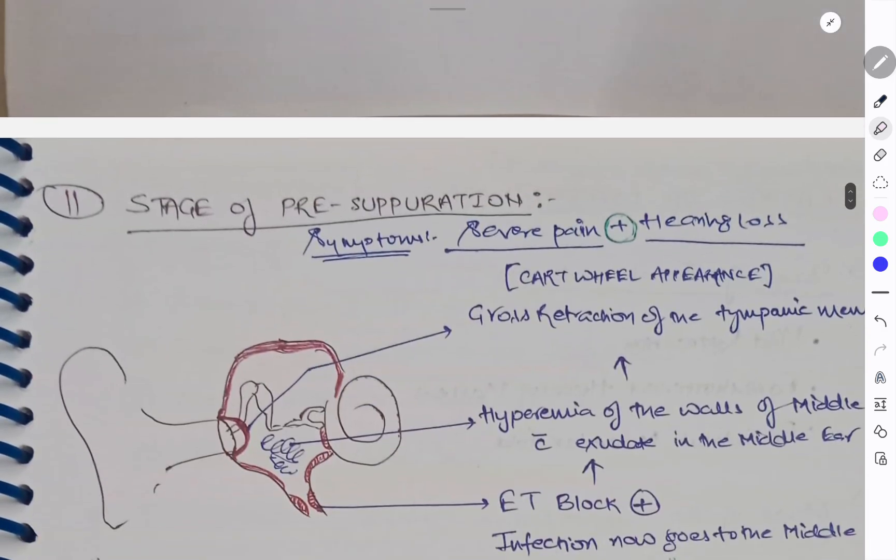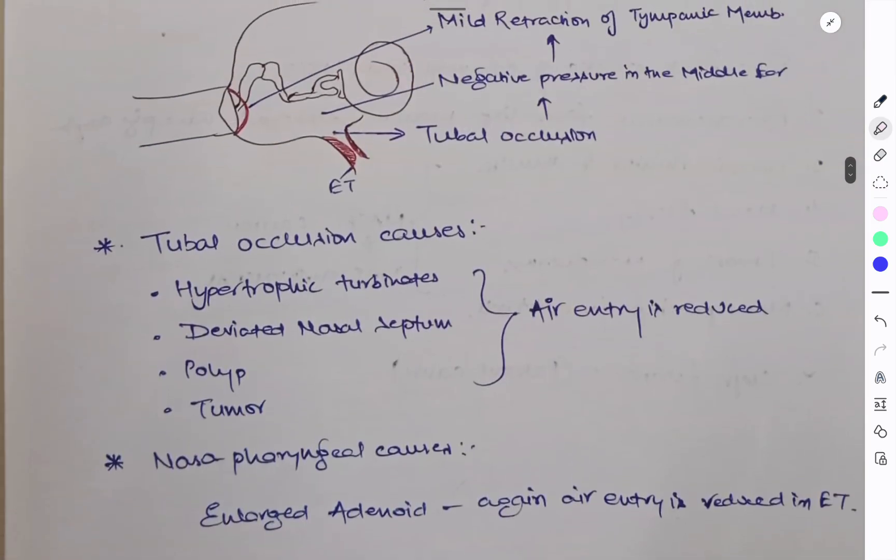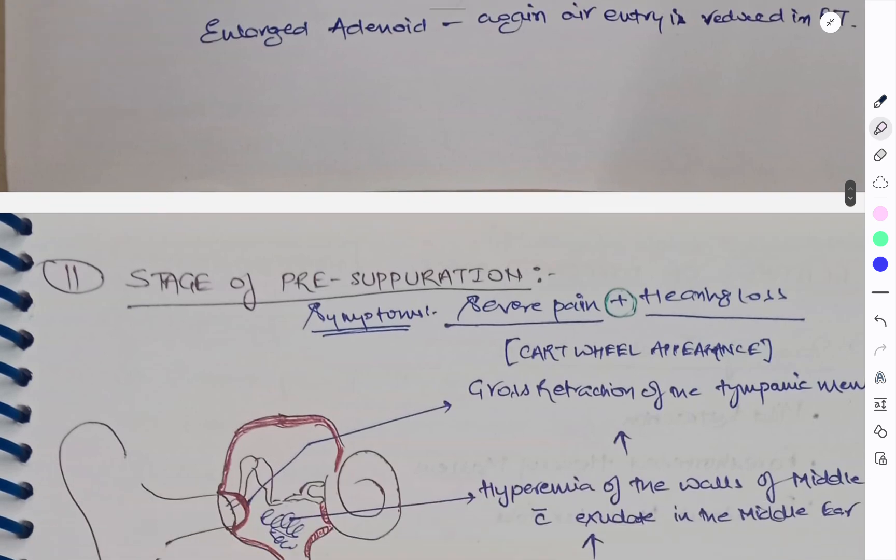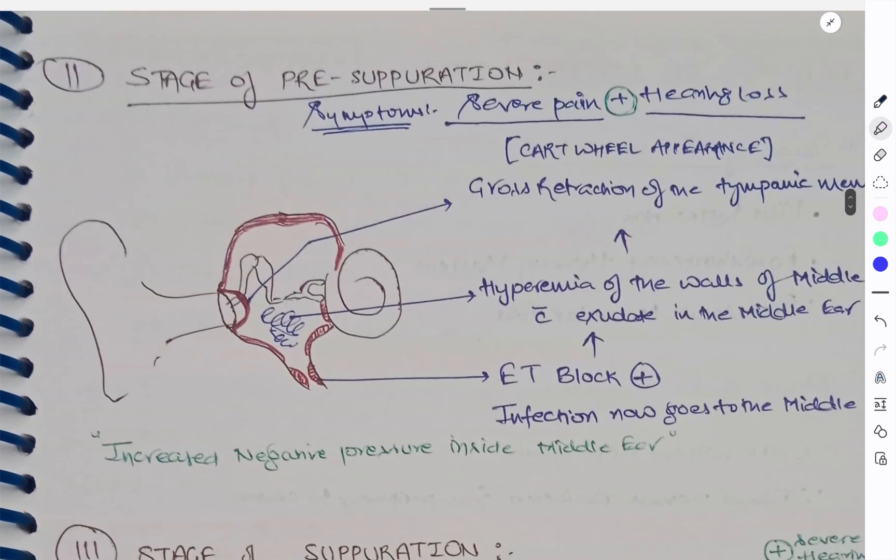Coming to the second stage, from stage of tubal occlusion it will go to pre-suppurative stage. So here what you will see? Again that ET block was there. Now what happens? There is hyperemia of the walls of the middle ear which exfoliates in the middle ear. This will cause gross retraction of the tympanic membrane, leading to symptoms like severe pain plus hearing loss. Here you will see the cart wheel appearance. So due to increased negative pressure inside the middle ear, ET tube is blocked, exudate is increased, then gross retraction of the tympanic membrane and the symptoms are severe pain plus hearing loss.